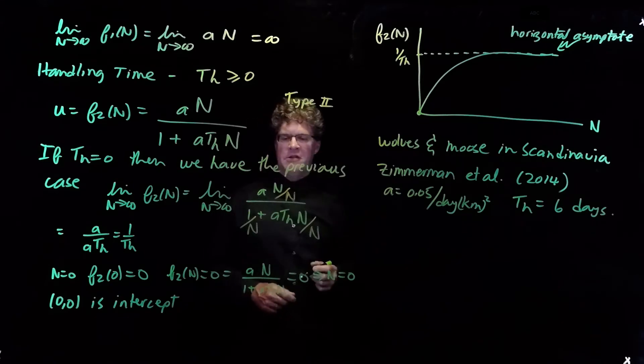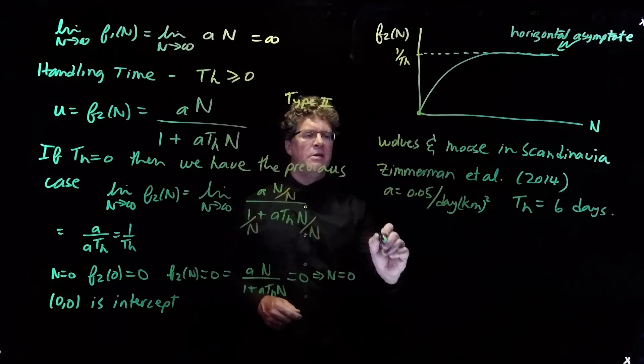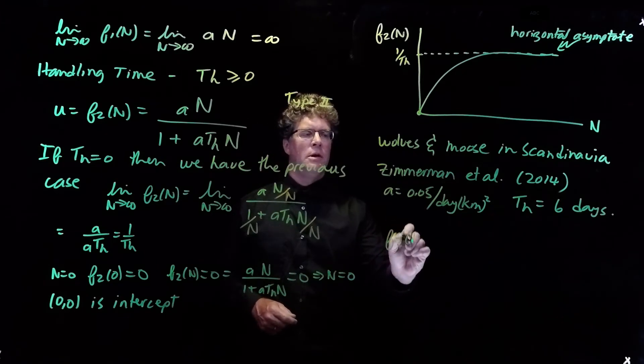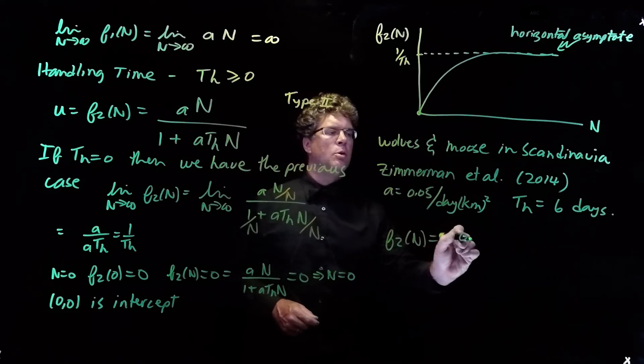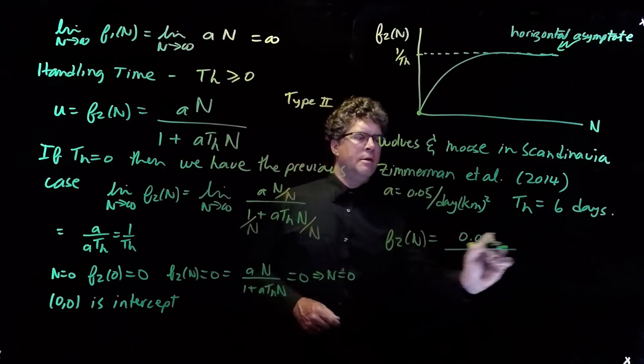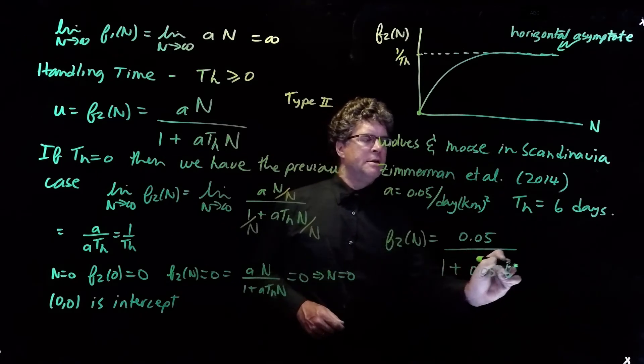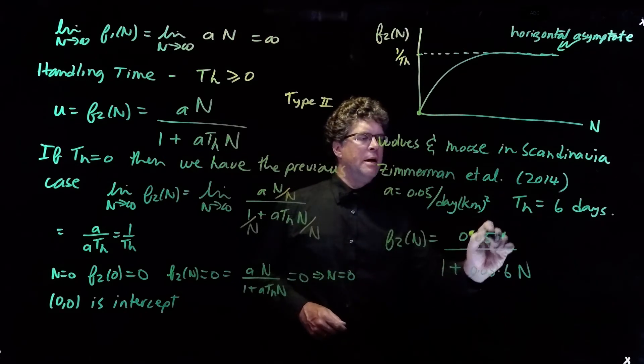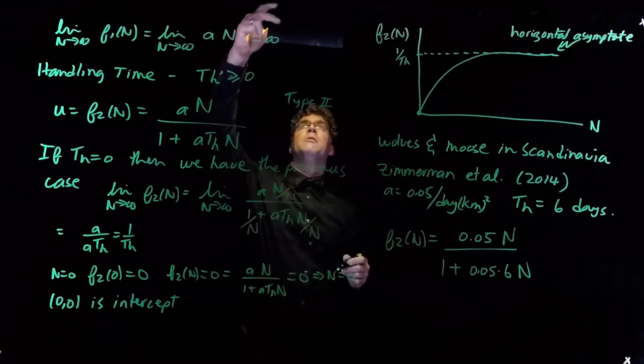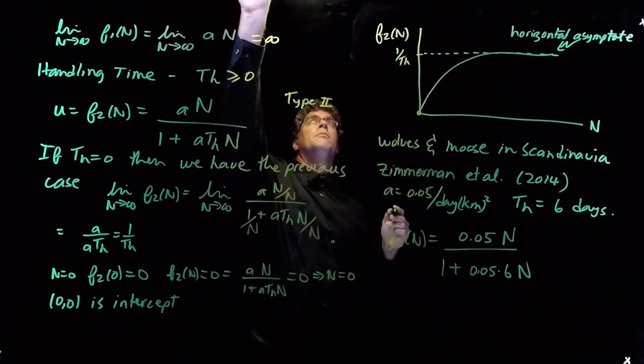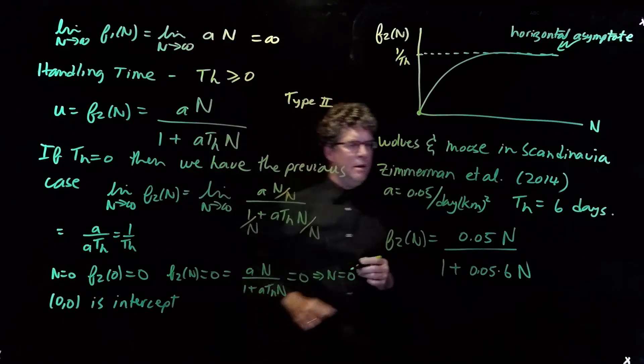Okay. So, we can put this in the function. And now we see that F2 of n is 0.05 n divided by 1 plus 0.05 times 6 n. And there should be an n on the top as well as the bottom.